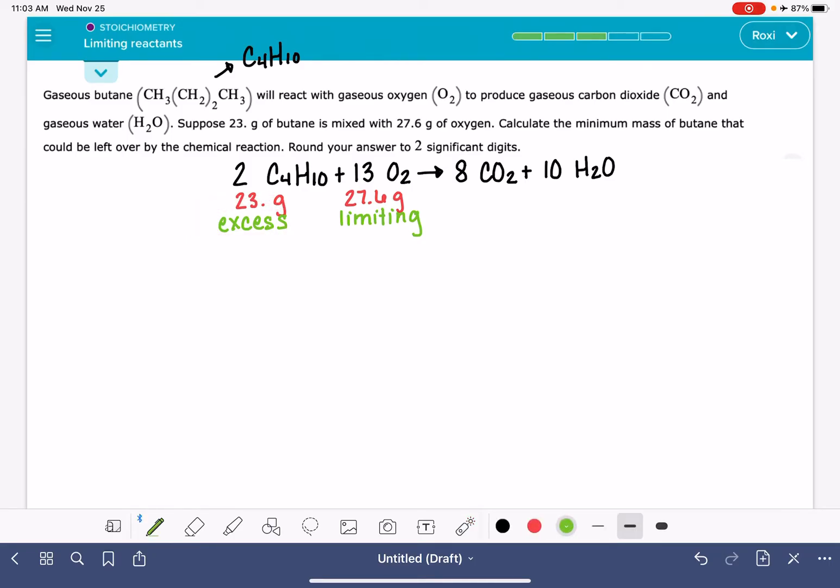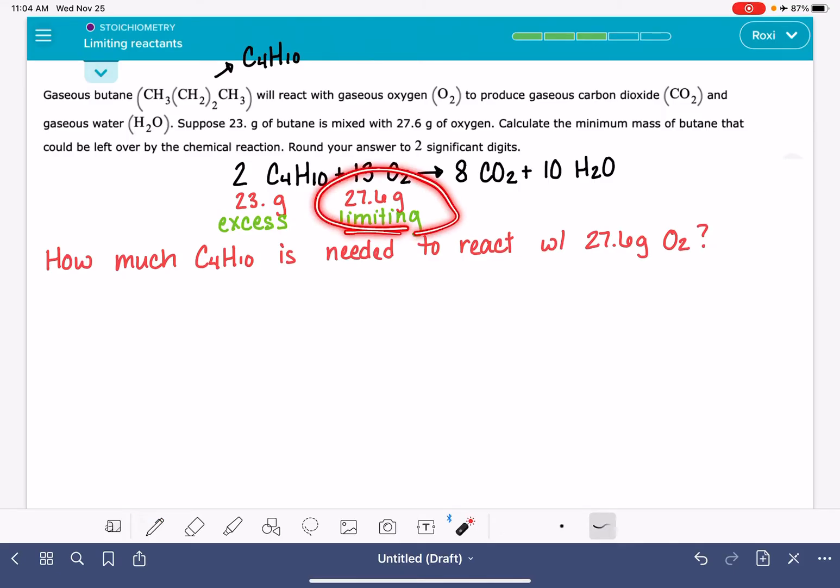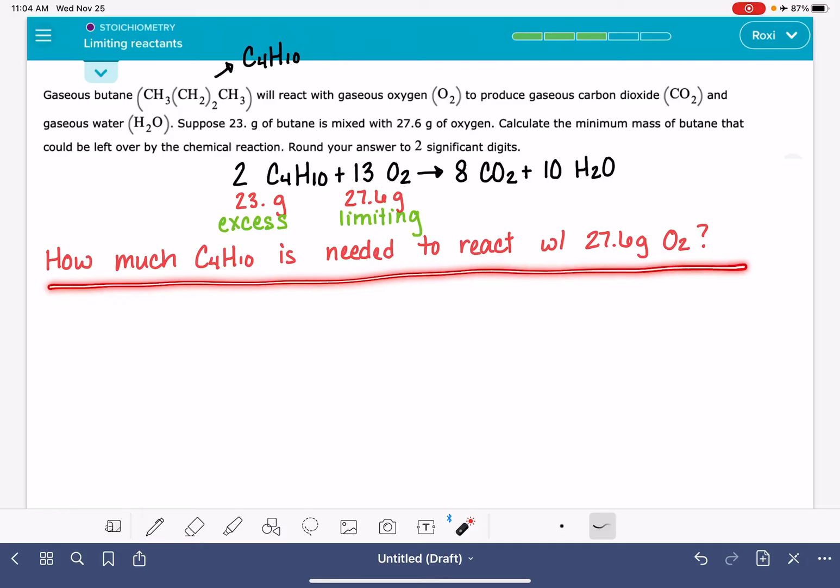So what this question really is asking, like the actual wording of this question is how much butane C4H10 is needed to react with 27.6 grams of O2. So since we know, or we assume that O2 is the limiting reactant, what I want to do is think about this question up here, think about it in this context.